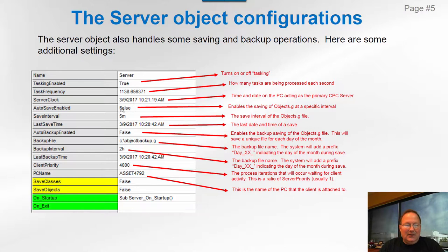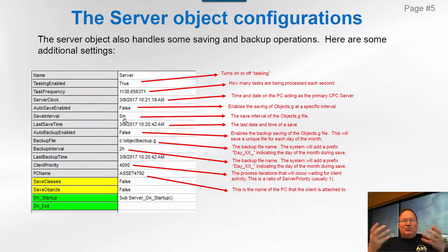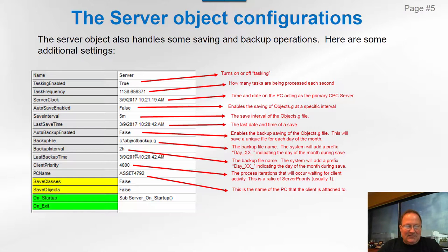Auto save enabled basically tells the server to save the objects.g file at a certain time interval — normally set for one minute or 30 seconds. It represents a snapshot in time of the current process. This is how we handle automatic restarts after power losses: the computer saves the objects.g file every minute, and when it boots back up, it loads exactly the configuration and real-time process state from the last save. Last save time is displayed here.